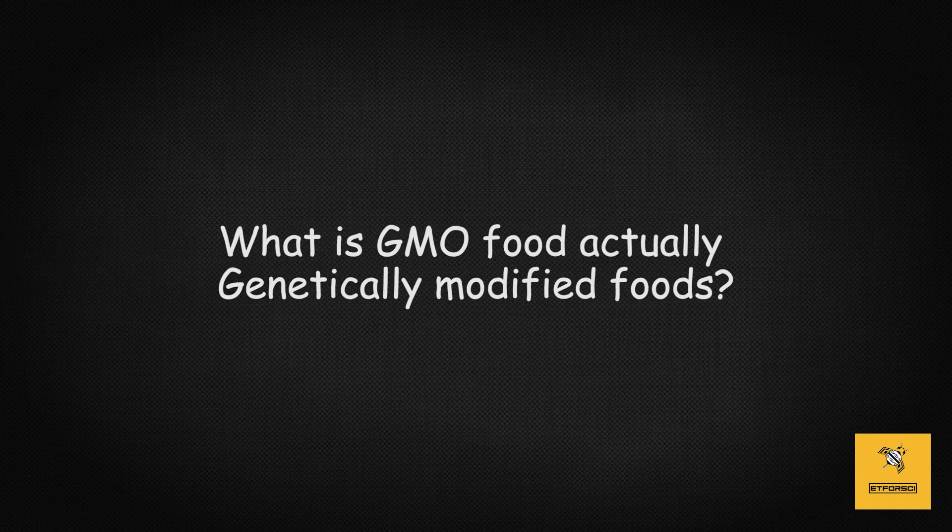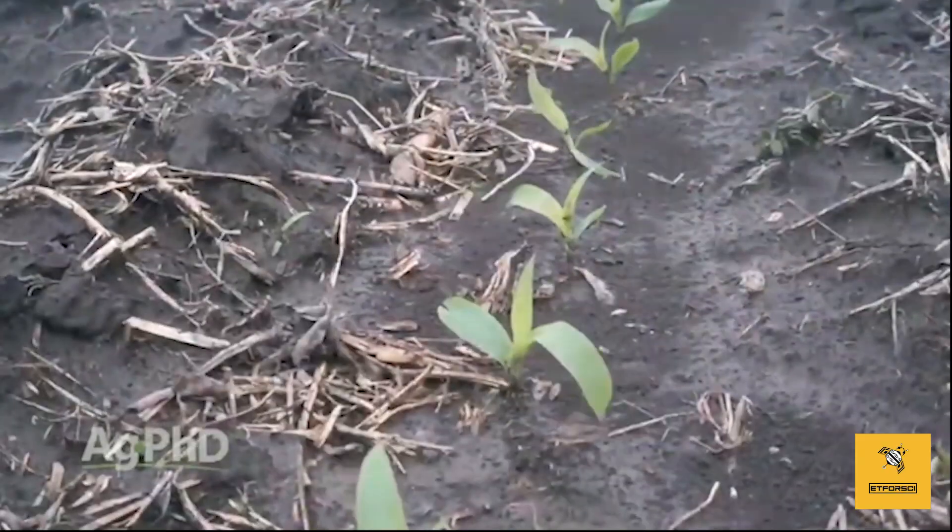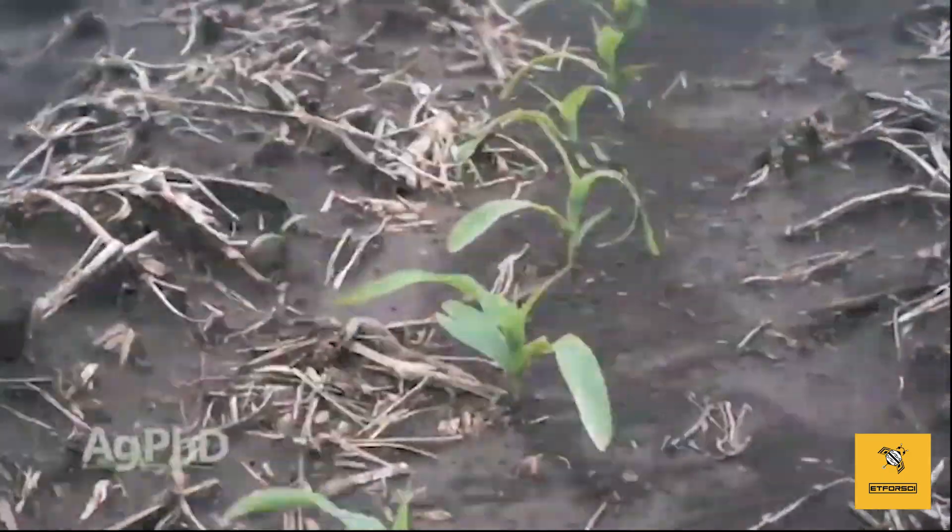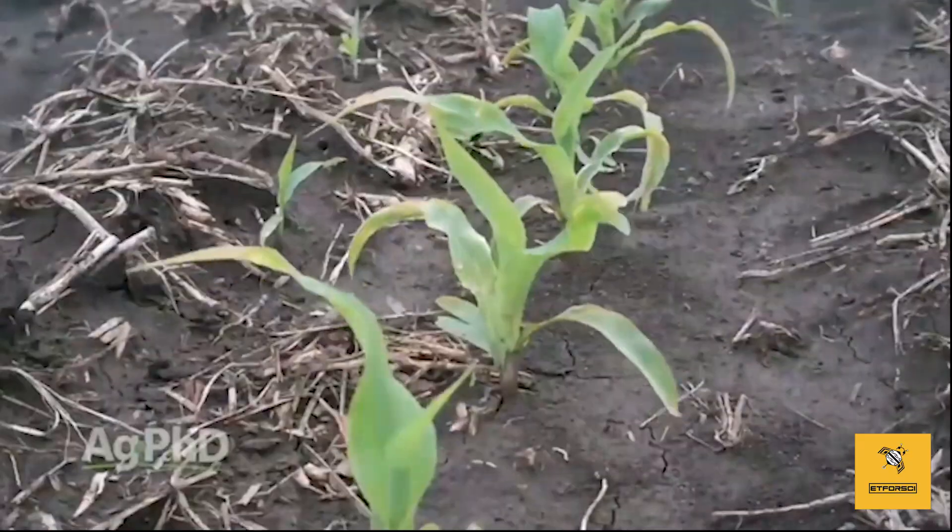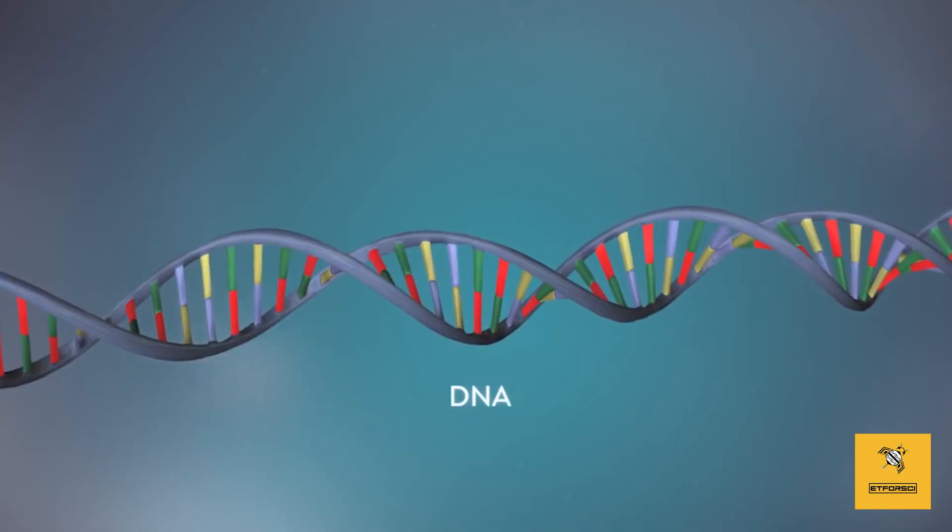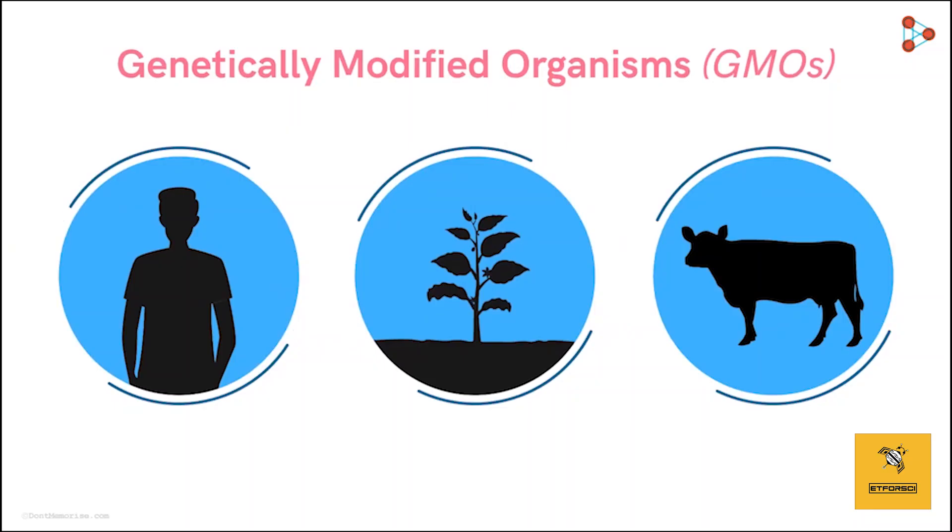Now, what are genetically modified organisms foods? Genetically modified foods or bioengineered foods are foods produced from organisms whose DNA has been modified using genetic engineering methods. This is how GMOs are defined in many sources. Let's examine a little more.